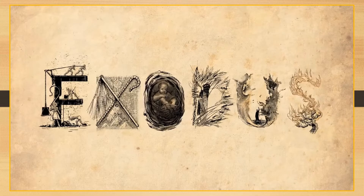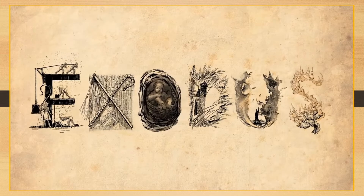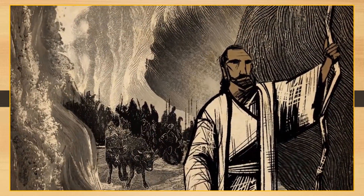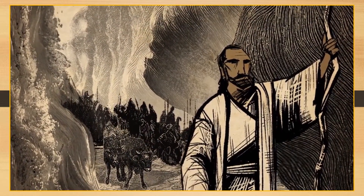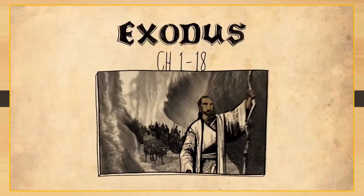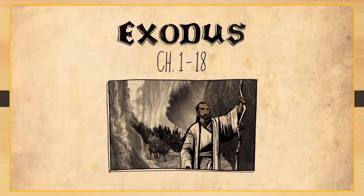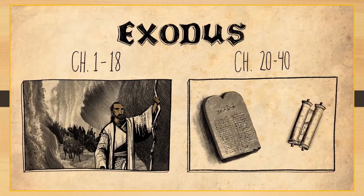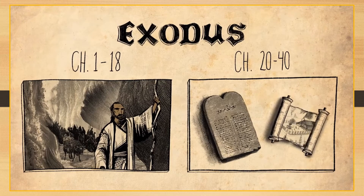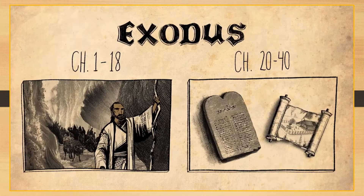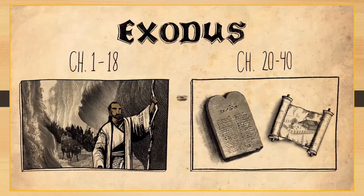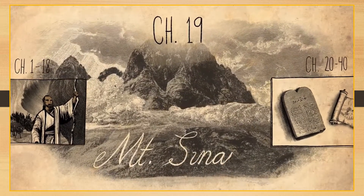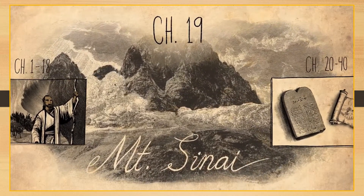Let's talk about the book of Exodus. You're probably familiar with this book because of the epic story of Moses leading Israel out of slavery from Egypt. But that's just the first half of the book. The second half has Moses giving the Ten Commandments to Israel along with blueprints for making a sacred tent. Right here in the middle is a story that connects these two halves together, and it all takes place at the foot of a famous mountain.